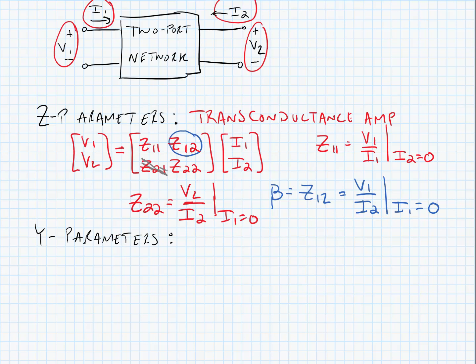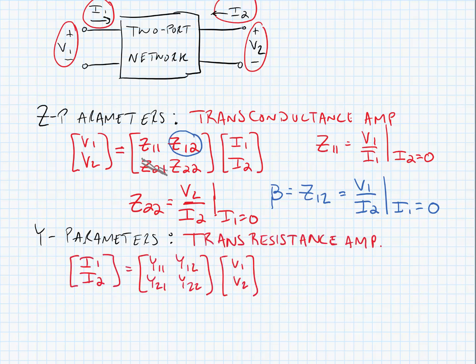Next, let's look at Y-parameters. Y-parameters are used for trans-resistance amplifiers. In other words, a Y-parameter is used when our input to the network is a current and our output to the network is a voltage. They're defined by the following matrix equation. If we're trying to isolate one of the parameters, for instance Y11, it's equal to I1 over V1 when V2 is equal to 0.